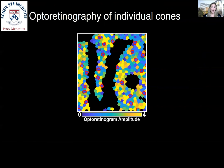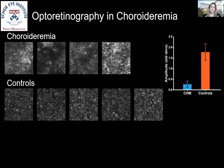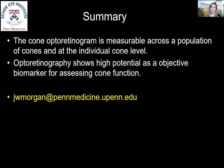Shown here is an image of the parafoveal cone mosaic where each cone has been assigned its opto-retinogram amplitude and color coded accordingly. This has high potential for translational studies aimed at understanding retinal disease and its treatment — in particular, as regenerative medicine aims to restore function to cones that are structurally present, we can now measure that function. We have also looked at the opto-retinogram in disease states, comparing four choroideremia subjects to five controls, and found that the amplitude of the opto-retinogram was greatly reduced in choroideremia subjects compared to controls.